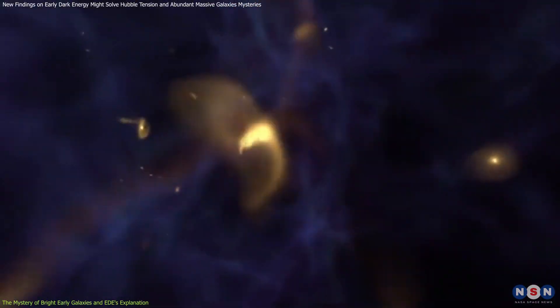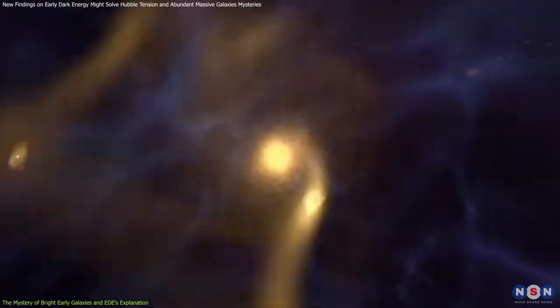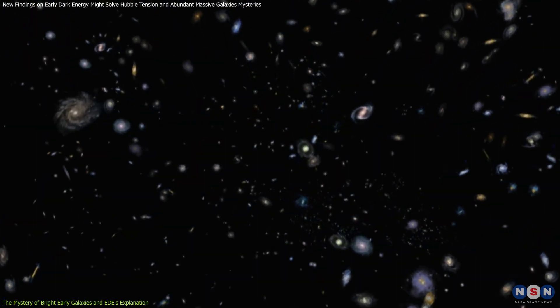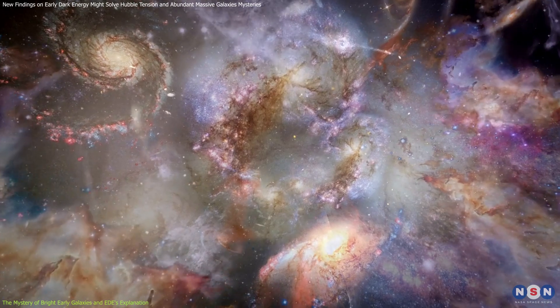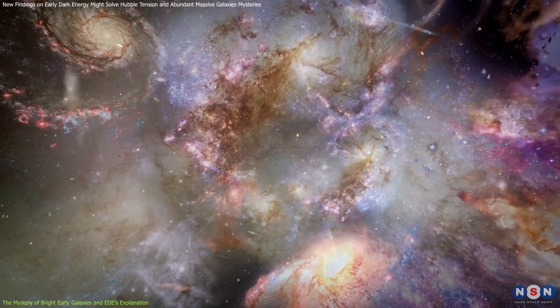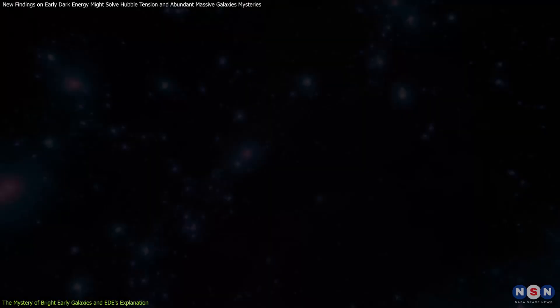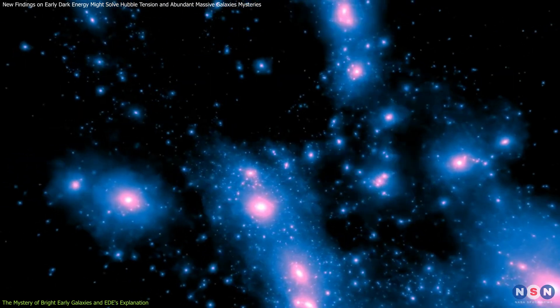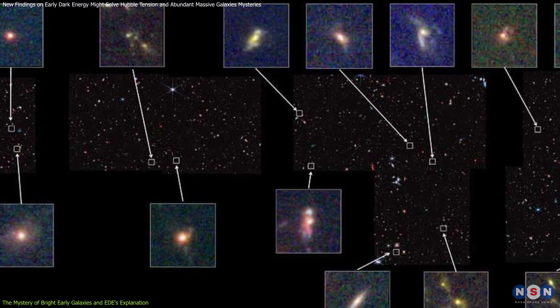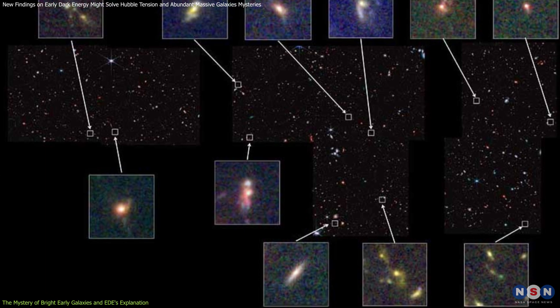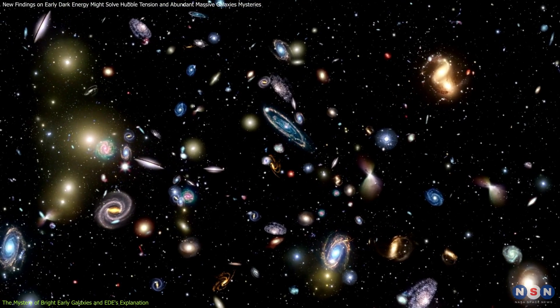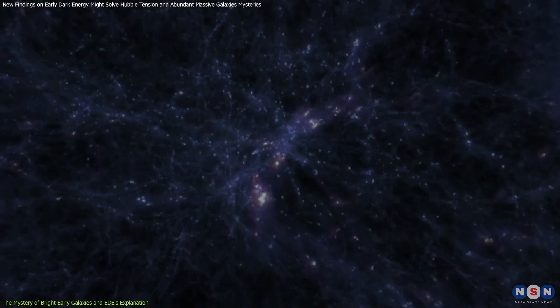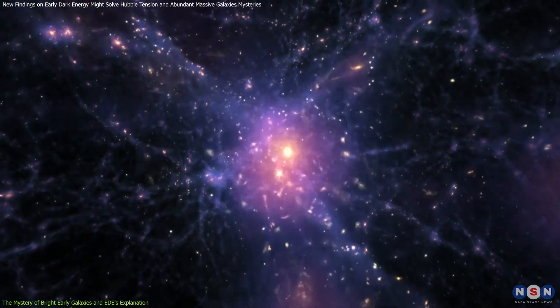This connection between early dark energy and galaxy formation is more than just a coincidence. If early dark energy did cause a brief but significant acceleration in the universe's expansion, it would mean that galaxies formed in a different cosmic environment than we previously thought. The increase in early dark matter halo formation would create fertile grounds for the early and rapid assembly of bright galaxies, helping to explain why Webb sees so many of them. This suggests that our models of galaxy formation need revision, and that early dark energy might play a crucial role in understanding not just when galaxies form, but how they grow and evolve over time.